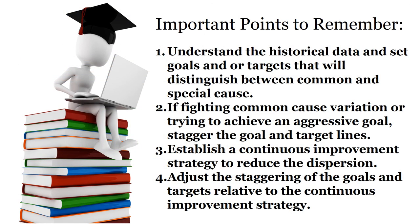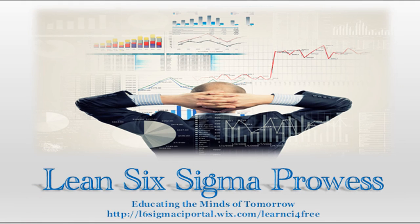There are four very important points to take away from this lecture in establishing KPI charts. 1. Understand the historical data and set goals and or targets that will distinguish between common and special cause. 2. If fighting common cause variation or trying to achieve an aggressive goal, stagger the goal and target lines. 3. Establish a continuous improvement strategy to reduce the dispersion. And 4. Adjust the staggering of the goals and targets relative to the continuous improvement strategy. This completes this lecture. In lecture 8, we will discuss how to improve target and goals for KPI charts.